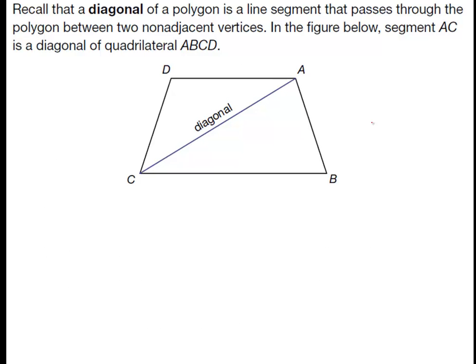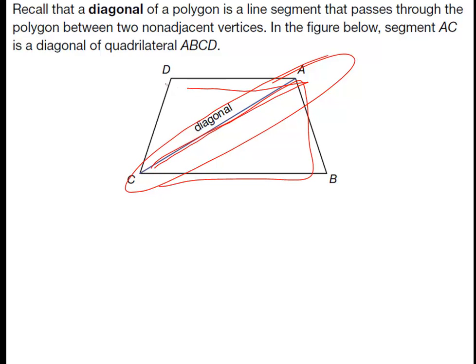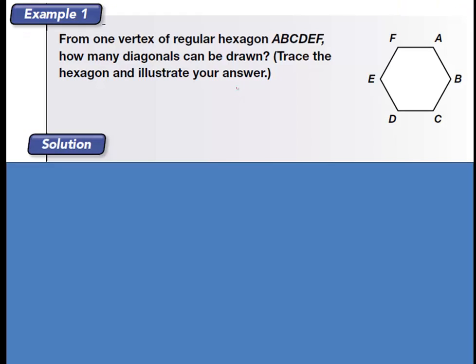First thing you need to recall is that a diagonal of a polygon is a line segment that passes through the polygon between two non-adjacent vertices. So in this figure you see here, the AC segment is a diagonal, and what it does is it takes a polygon and divides it into two triangles, two separate triangles, each totaling 180 degrees. We all know that, right? A triangle is a total of 180 degrees.